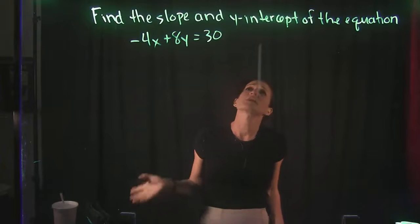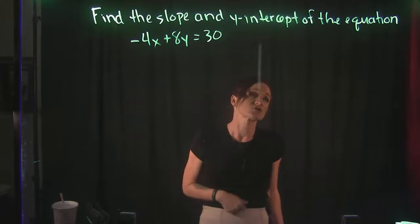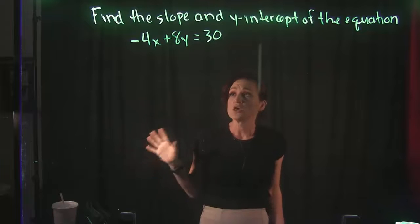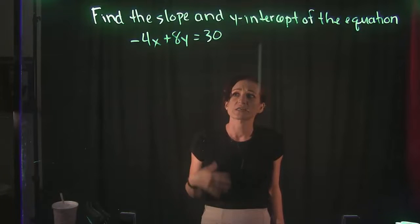So for this question, we're going to find the slope and the y-intercept of the following equation. We're given the equation -4x + 8y = 30.